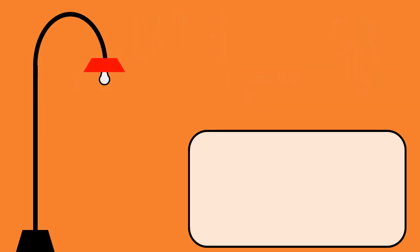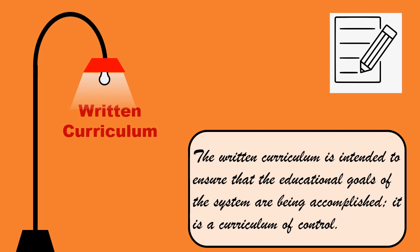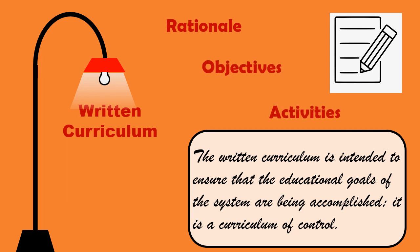2. Written Curriculum. The written curriculum is intended to ensure that the educational goals of the system are being accomplished. It is a curriculum of control. Typically, the written curriculum is much more specific and comprehensive than the recommended curriculum, indicating a rationale that supports the curriculum, the general objectives to be studied, and the kinds of learning activities that should be used. The written curriculum is an important component of authentic literacy — the ability to read, write, and think effectively.